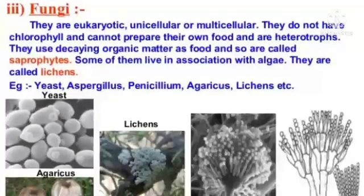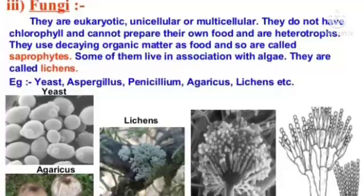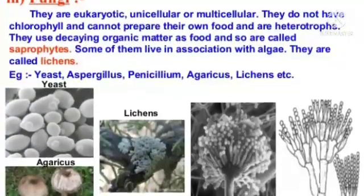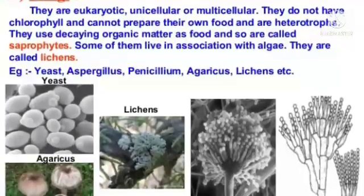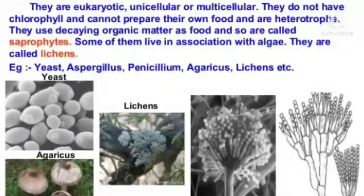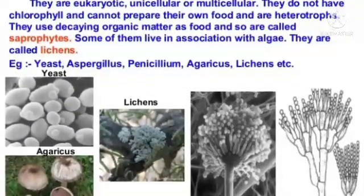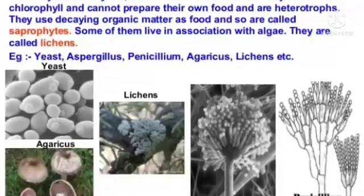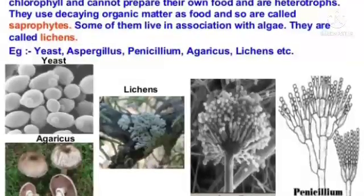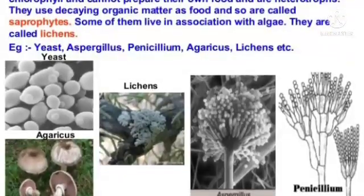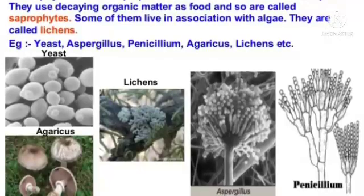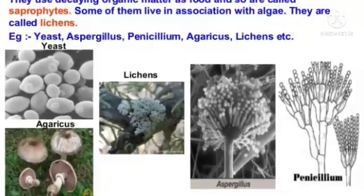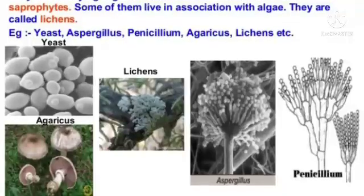Fungi: They are eukaryotic, unicellular or multicellular. They do not have chlorophyll and cannot prepare their own food, so they are heterotrophs. They use decaying organic matter as food and are called saprophytes. Some of them live in association with algae — they are called lichens. Examples: yeast, Aspergillus, Penicillium, Agaricus, lichens, etc.